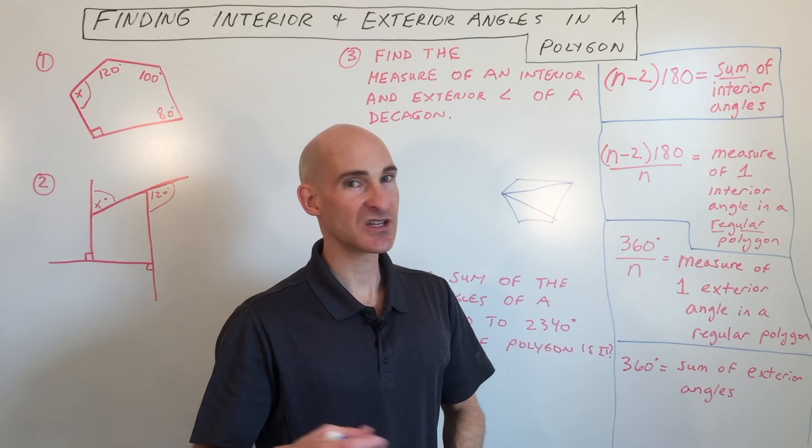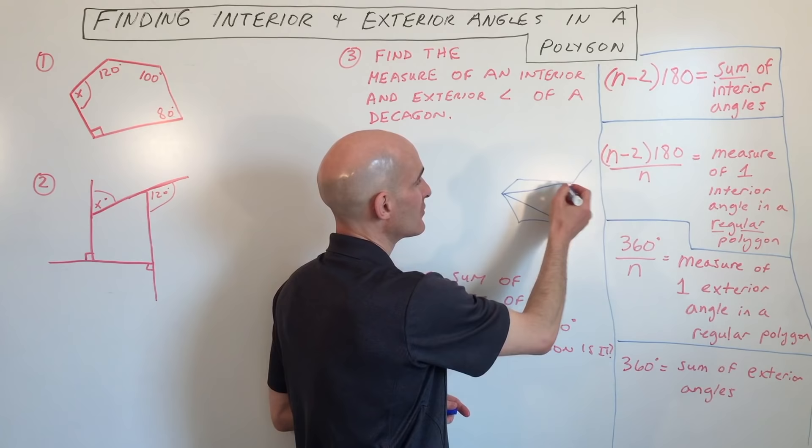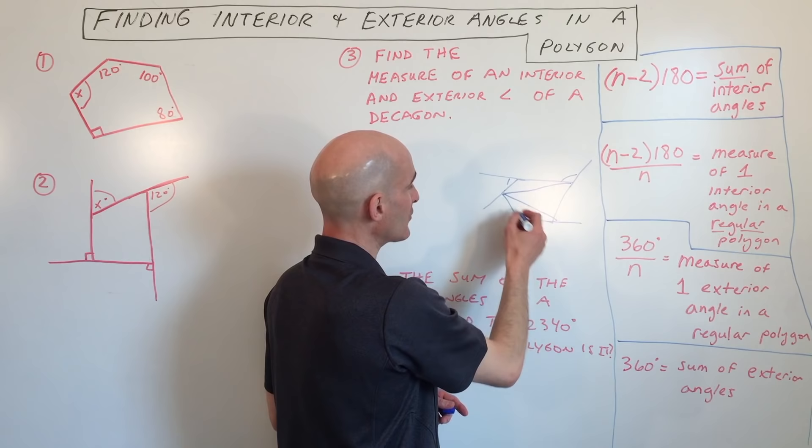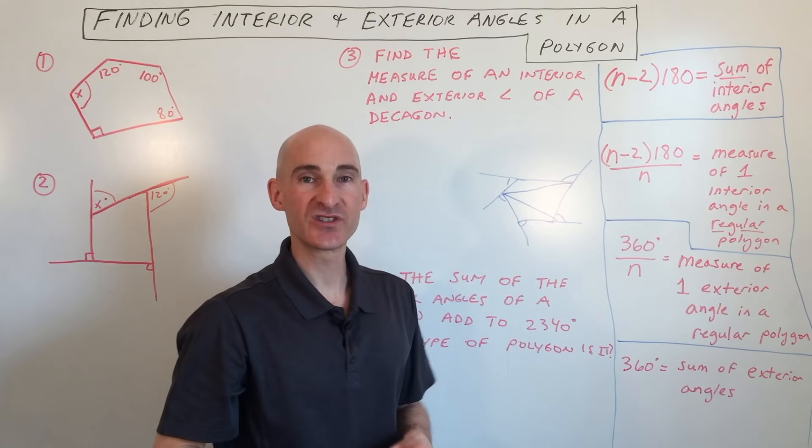So for example here, if I extend the sides like so, these angles that are formed on the outside of the polygon here, those are all going to add up to 360 like a circle. So let's get into some examples. I'll show you how these work.